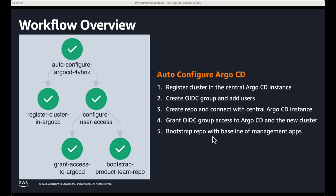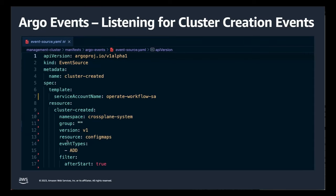With that, I will hand it over to Valentin for the remaining session and the demo. Let's jump into the source code and start with the event source. The event source captures the cluster creation event in the form of a config map. The config map contains all of the metadata which describes the new cluster and is required as an input for the Argo workflow. This config map is deployed as part of the Crossplane composition.